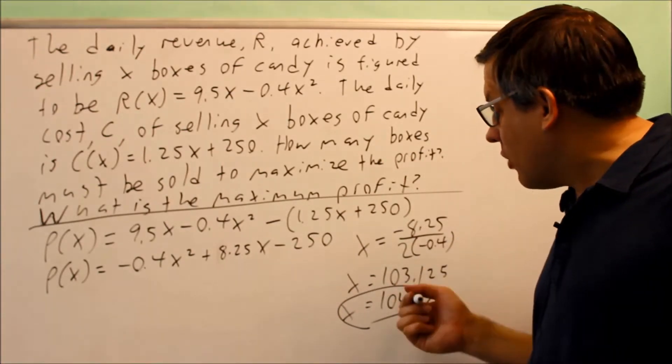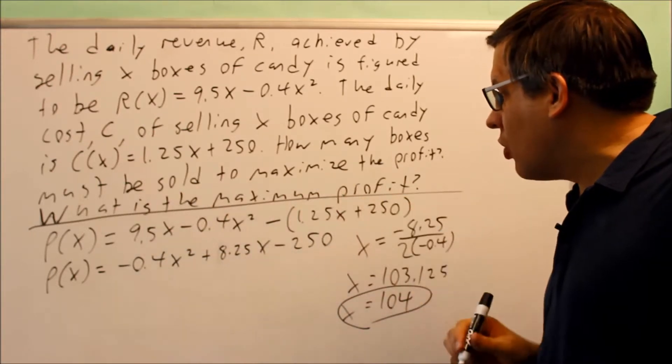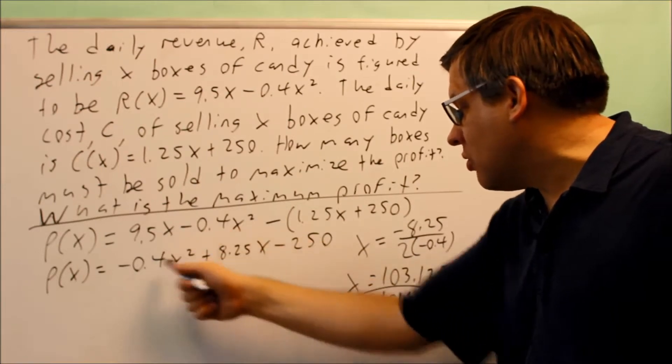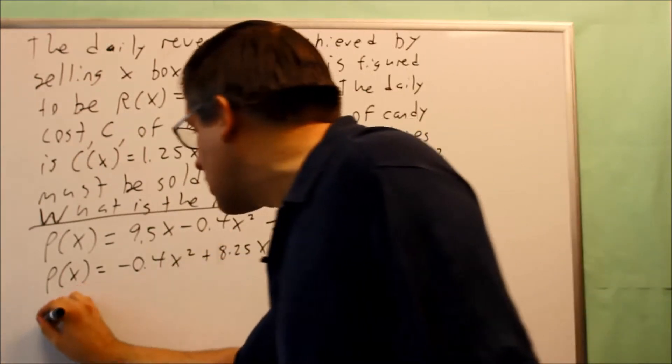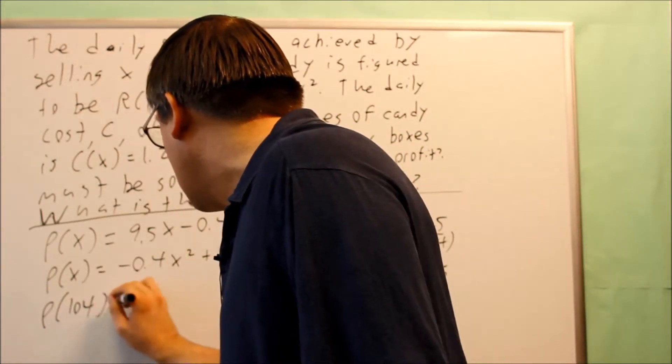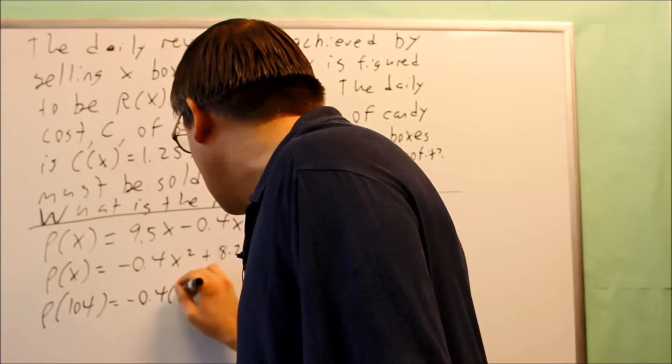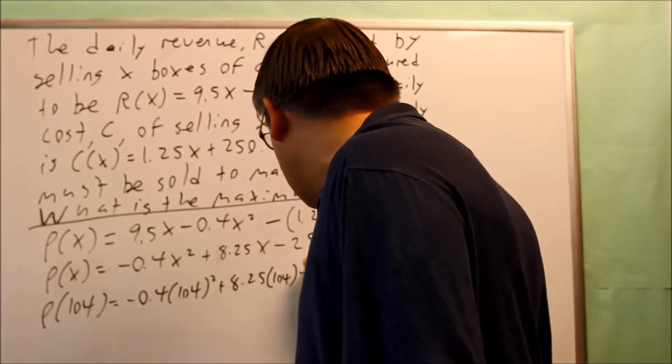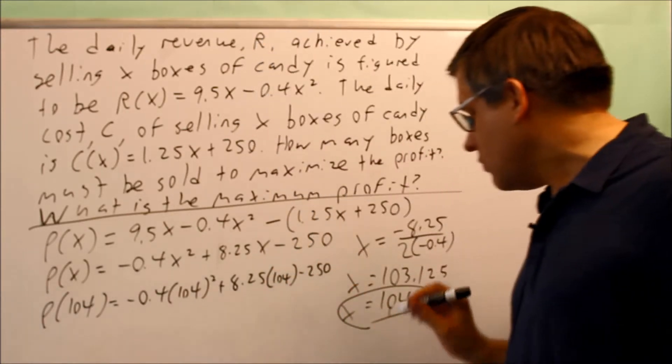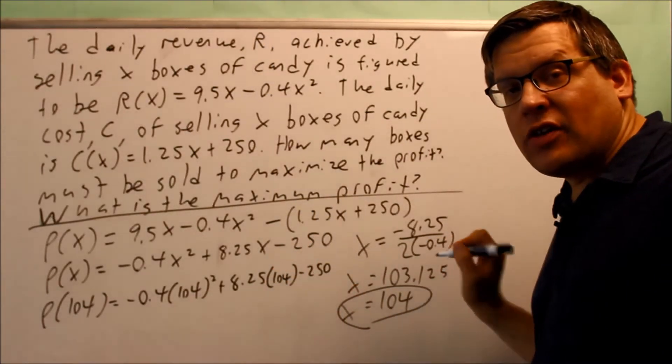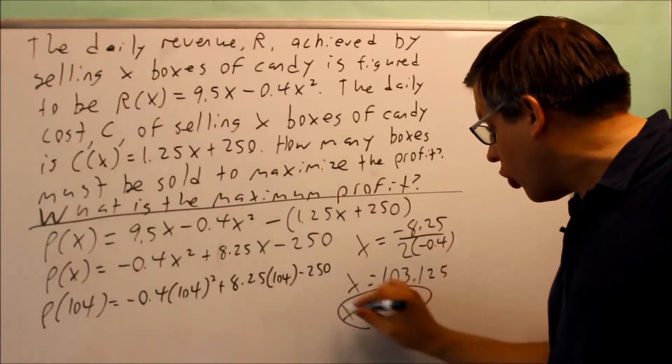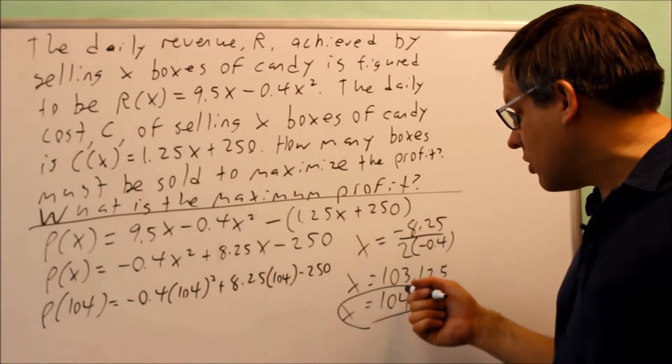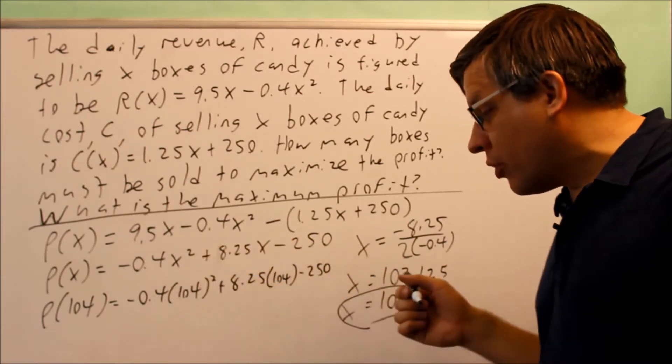Now that we have that, the second part asks what is the maximum profit. You're going to take 104 and put it into this formula. We're going to do P(104) and put 104 in for both the x's. Notice I'm not using 103.125, you don't want to use that. You want to use 104 because that's what we're actually selling - whole boxes worth.